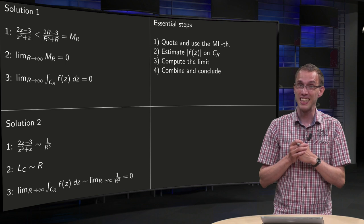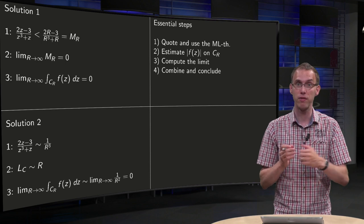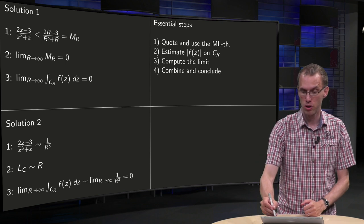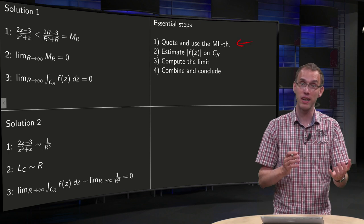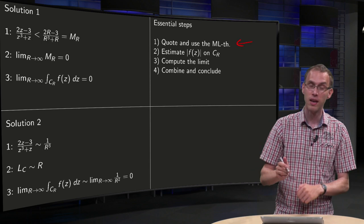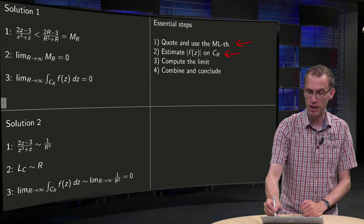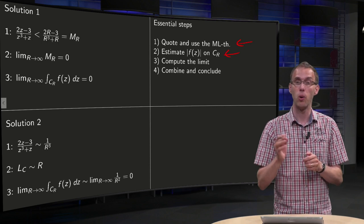What were the essential steps which you should have in your solution? Well, you should quote the ML theorem correctly and use it correctly. Then you need to estimate the norm of your f(z) on CR.